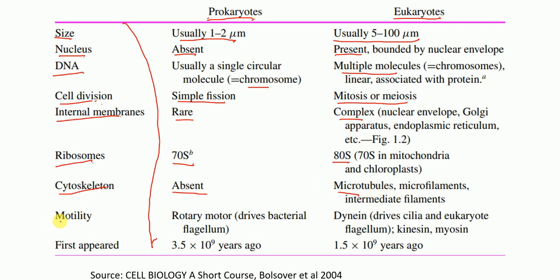In prokaryotes, when it comes to motility, the motility is driven by rotary motor that drives bacterial flagellum. Whereas in eukaryotes, dynein drives cilia and eukaryote flagellum, and also kinesin, myosin. These are the motility factors.